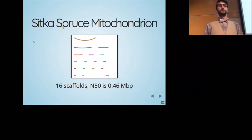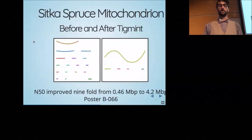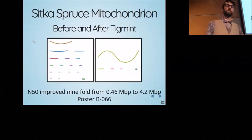Originally this assembly was in 16 scaffolds with an N50 of about half a megabase. After running Tigmint to correct misassemblies and ARCS to rescaffold, we improved the N50 fivefold, from half a megabase to four megabases. Most of the genome now is in a single four megabase contig.